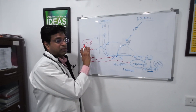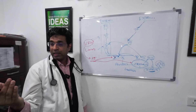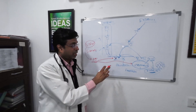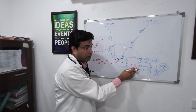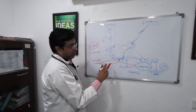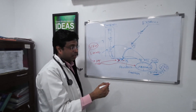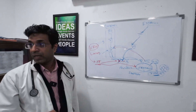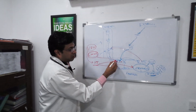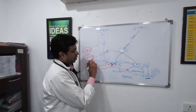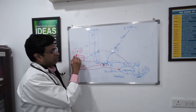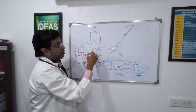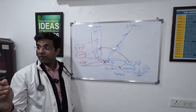Unfractionated heparin has both high molecular weight and long chains. Long chains are required to block thrombin, while short chains can inactivate factor 10A. When unfractionated heparin blocks 10A it blocks the common pathway, but when it blocks thrombin, the intrinsic pathway gets blocked indirectly. Low molecular weight heparin only blocks 10A. That's why APTT is used to measure unfractionated heparin activity.